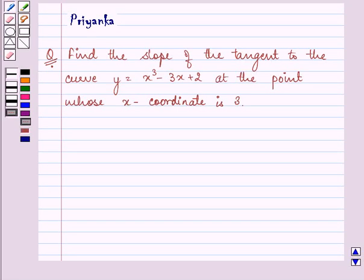Hello friends, how are you all today? The question says find the slope of the tangent to the curve y equals x cubed minus 3x plus 2 at the point whose x-coordinate is 3.